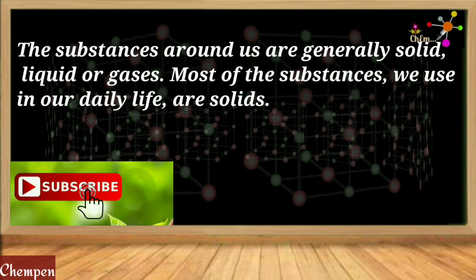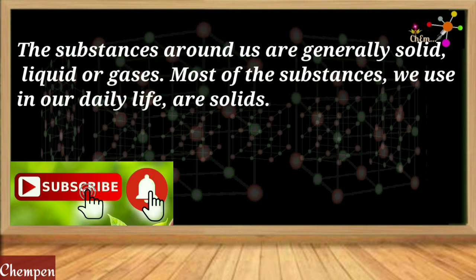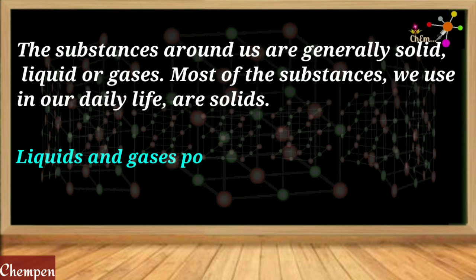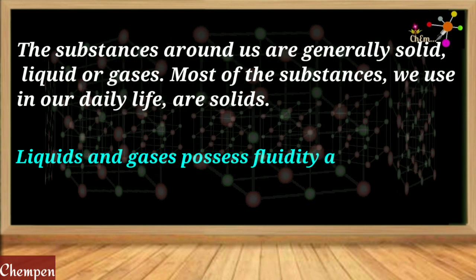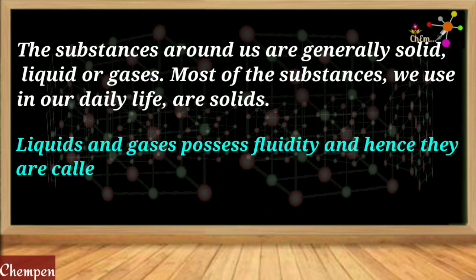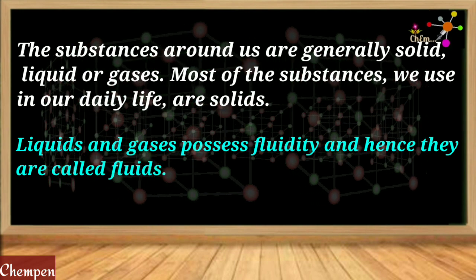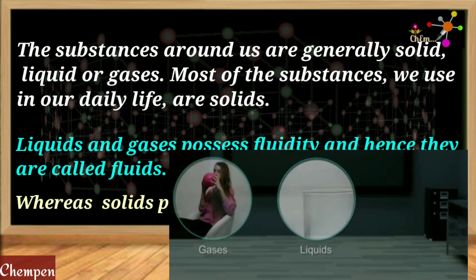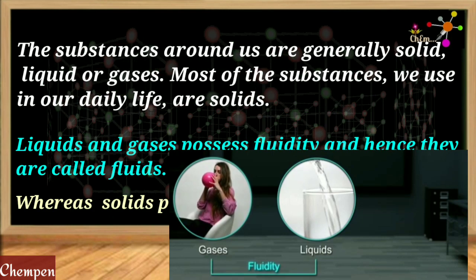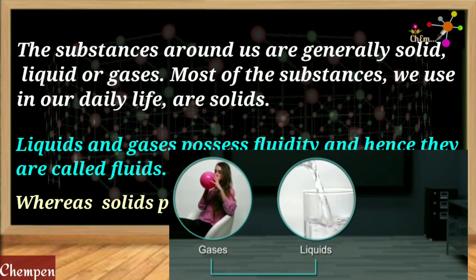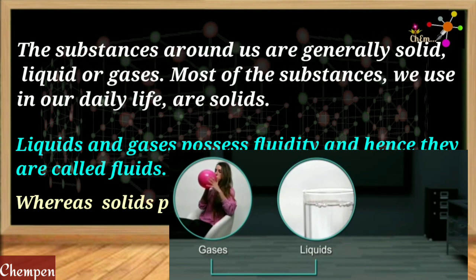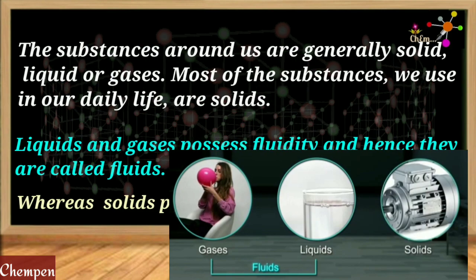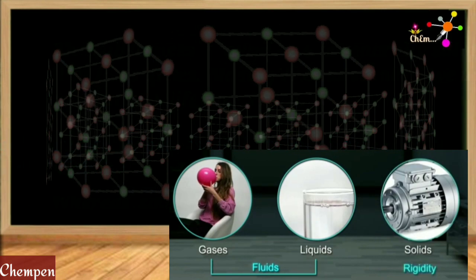Solid substances are rigid and this makes them different from the other two states of matter. Liquids and gases possess a flowing tendency — they can flow and hence these are called fluids. However, solids do not possess this kind of property. Solids are rigid, and this rigidity is attributed to the presence of very strong inter-particle forces of attraction among the constituent particles.